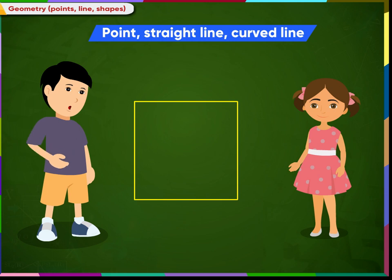Can you tell me which shape is this? Yes, this is a square. A square has four corners and four sides. All these sides are straight lines. So a square has one, two, three, and four straight sides. Wonderful!